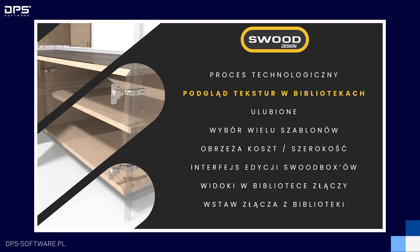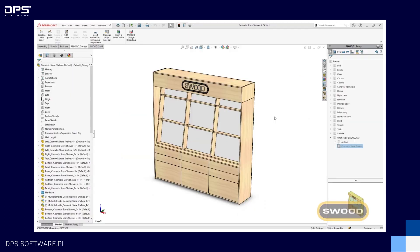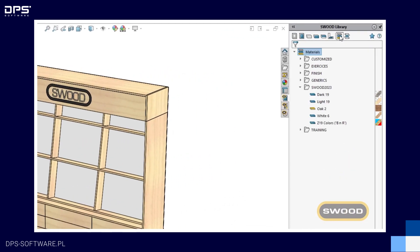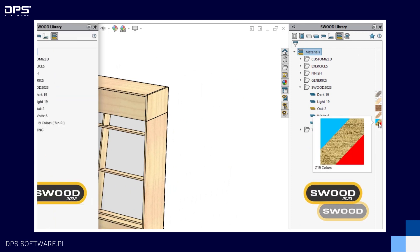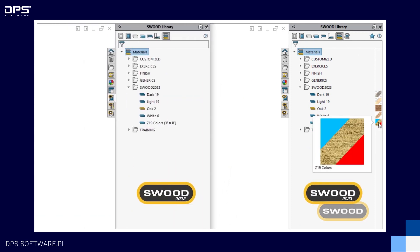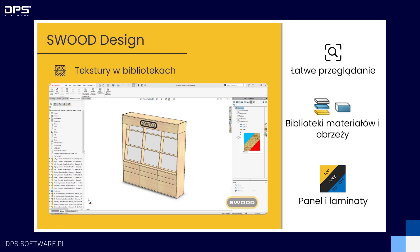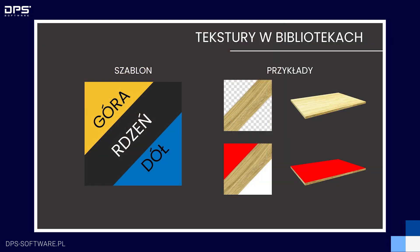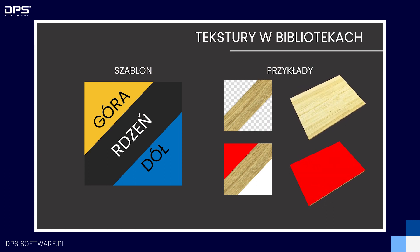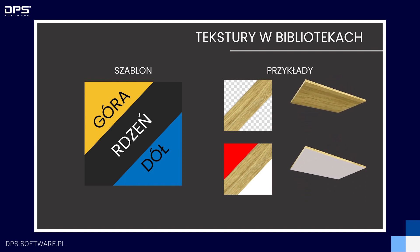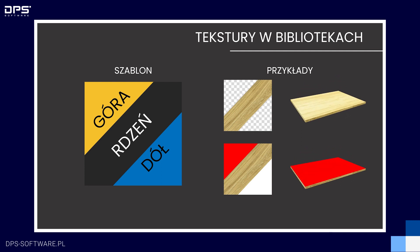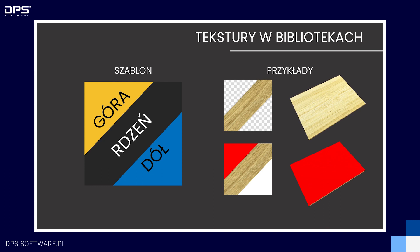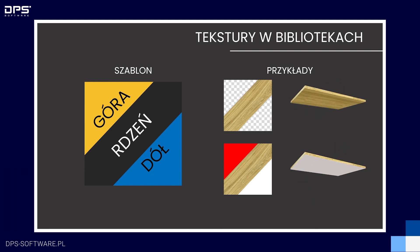Bardzo przydatną nowością jest podgląd tekstur w bibliotekach. W nowej wersji programu, kiedy przejdziemy do biblioteki materiałów lub obrzeży, zobaczymy dodatkową kolumnę, w której pojawiają się małe podglądy materiałów. Kiedy najedziemy kursorem, podgląd się powiększa. Podgląd składa się z trzech elementów: na środku mamy materiał główny, czyli rdzeń; w lewym górnym narożniku mamy teksturę nadaną na górną ścianę; a prawy dolny narożnik to tekstura lub kolor nadawany do dolnego laminatu.